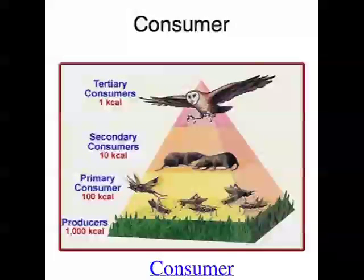Every other organism in a food chain is a heterotroph. Heterotrophs get their energy by eating other organisms — they can't make their own food like autotrophs can, so they must eat other organisms for food and energy. Heterotrophs are also called consumers. Food chains start with a producer, and then from that point on, all the other organisms in the food chain are called consumers.